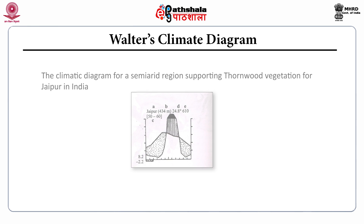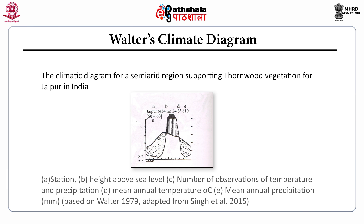This diagram is for semi-arid regions. The climatic diagram supports a thornwood vegetation for Jaipur in India, showing the time of water deficit and abundance of rainfall.